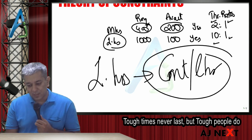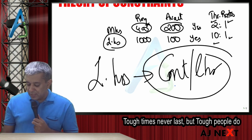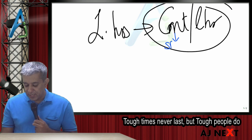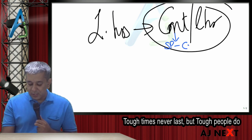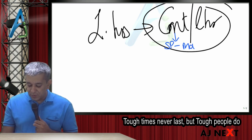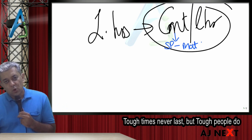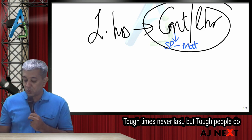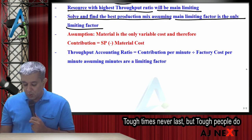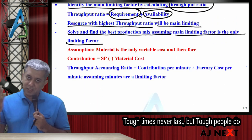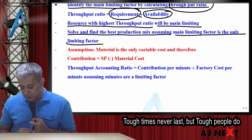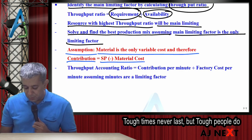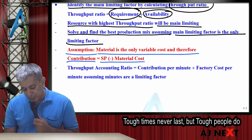Just remember one very big thing in this chapter. In this chapter, contribution is defined as selling price minus only one cost, and that one cost is material cost. Goldratt, Core and Cox had said that the rest of the world is fixed, except material. So, in this case, contribution is nothing but sales minus material cost. The assumption is that material is the only variable cost, and therefore contribution equals selling price minus material cost.